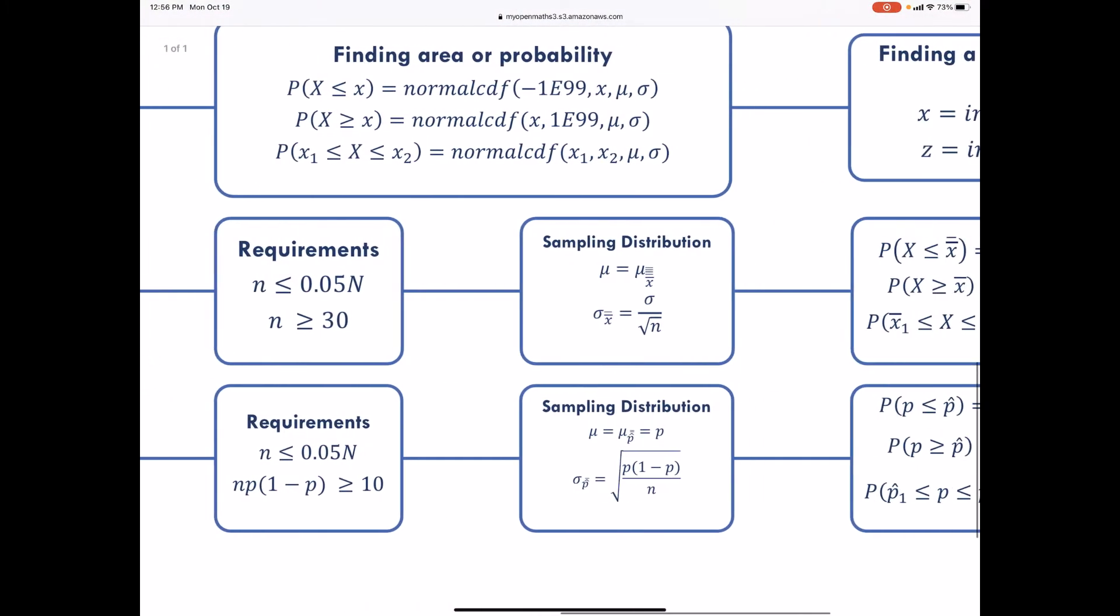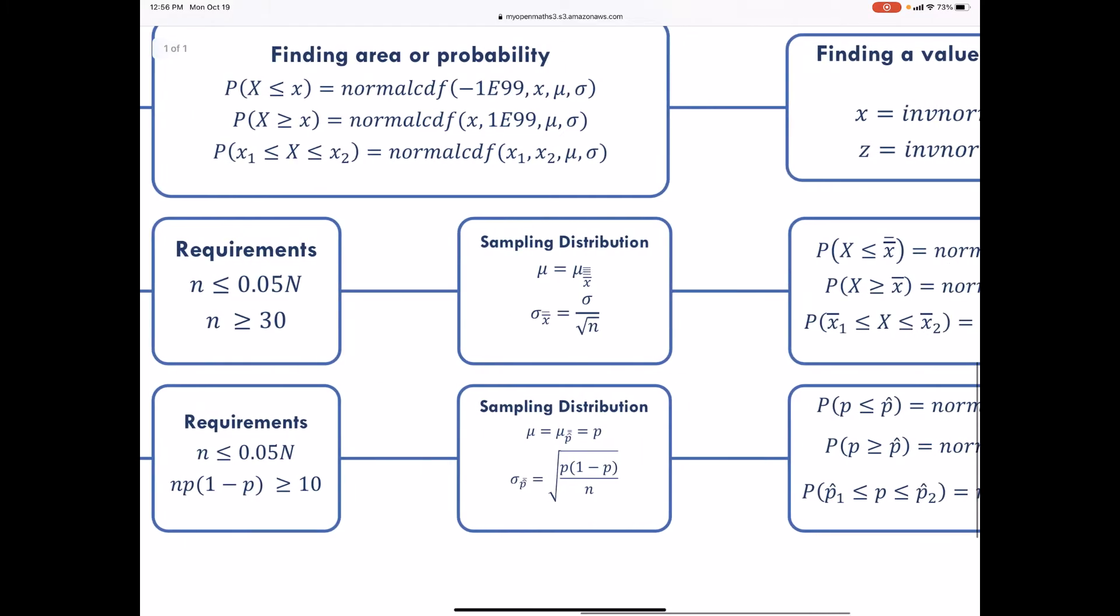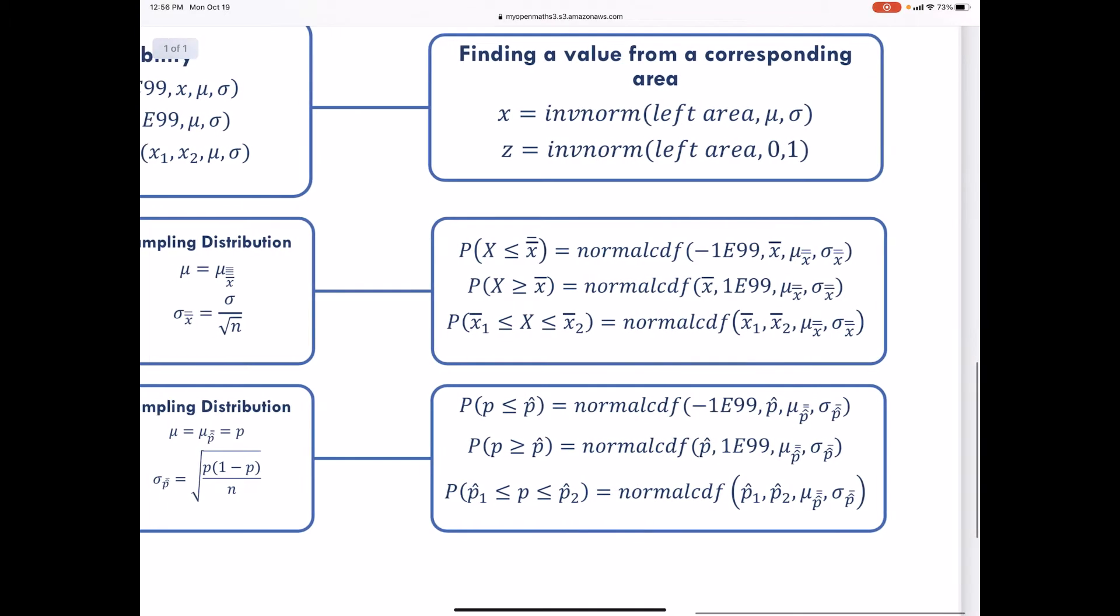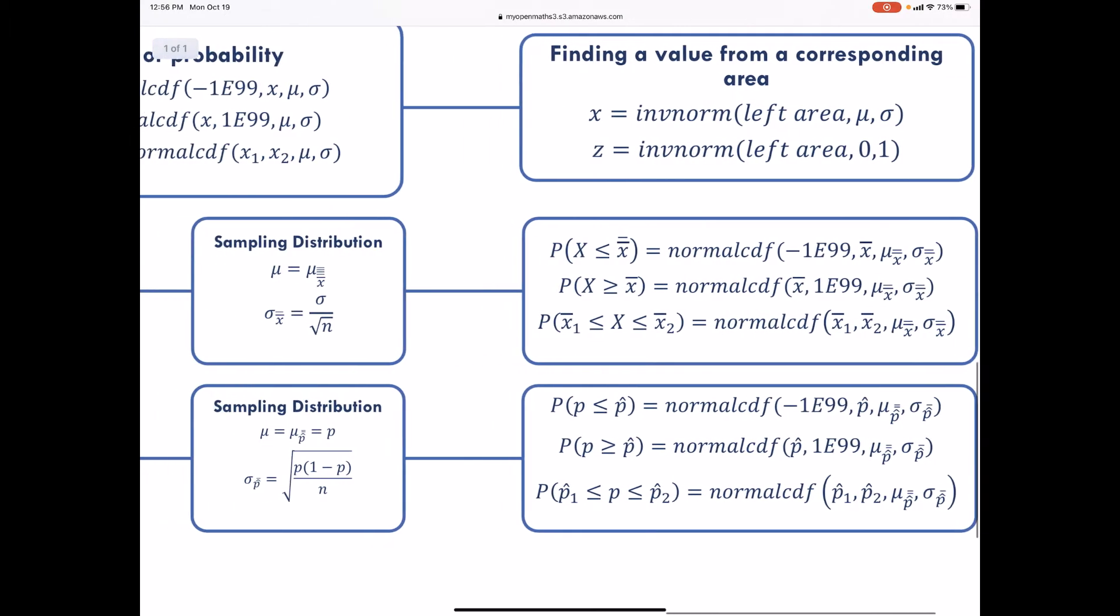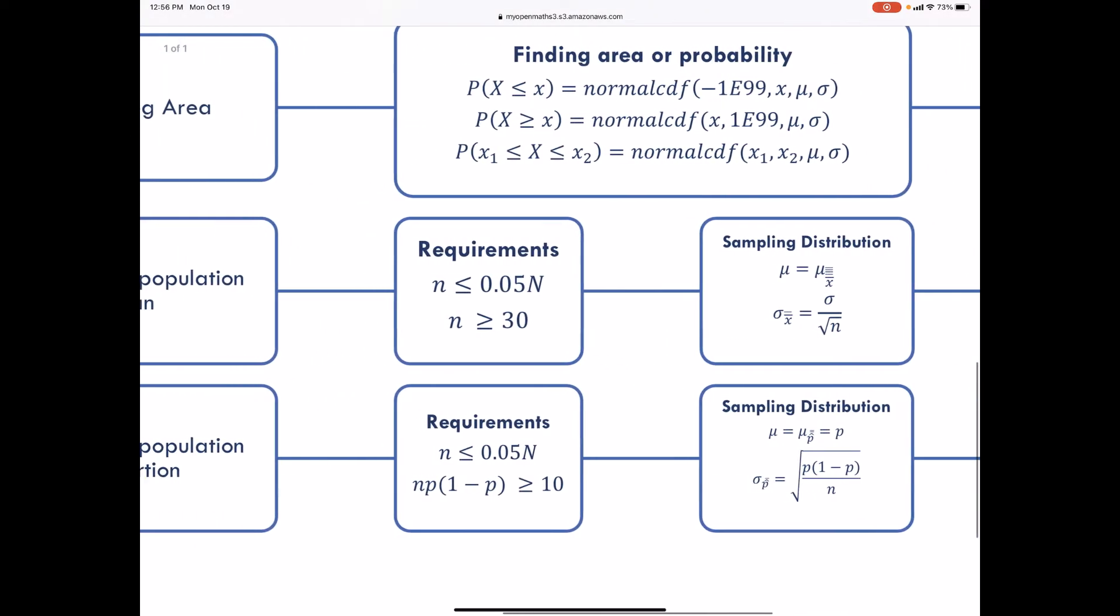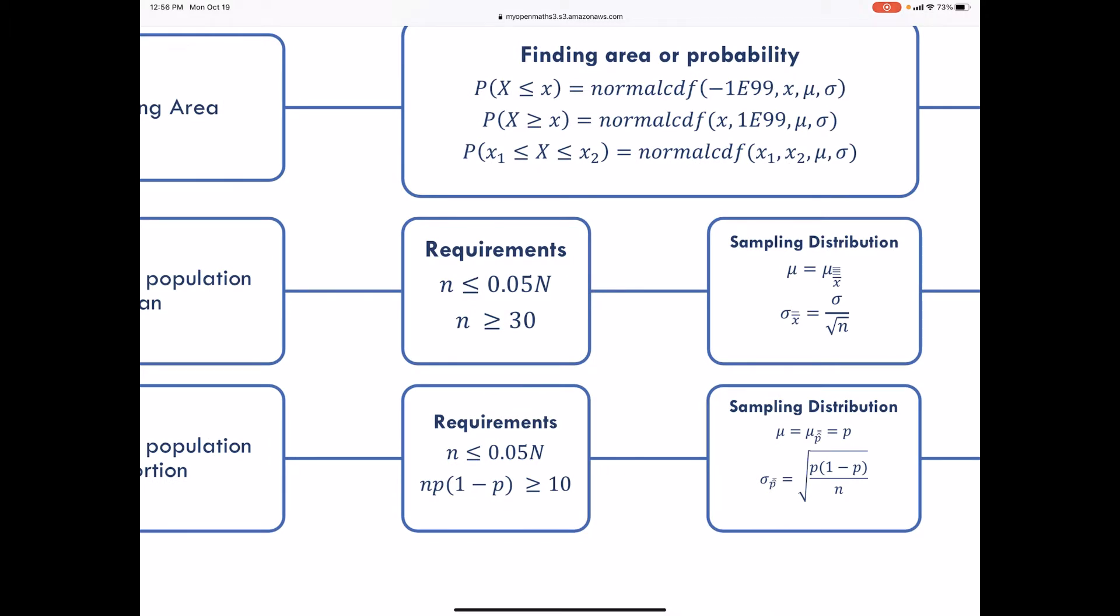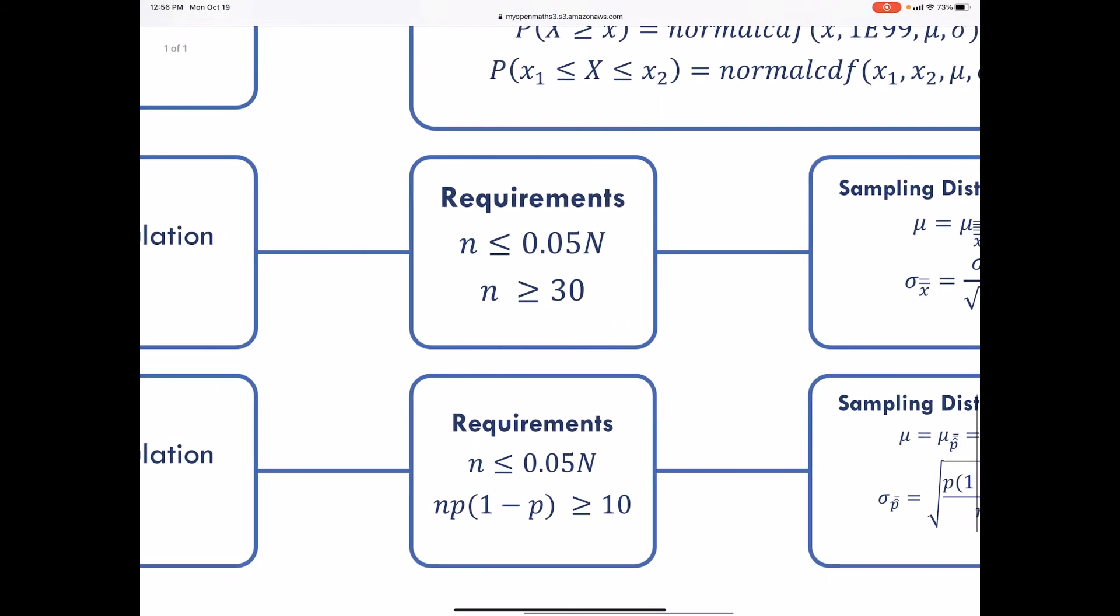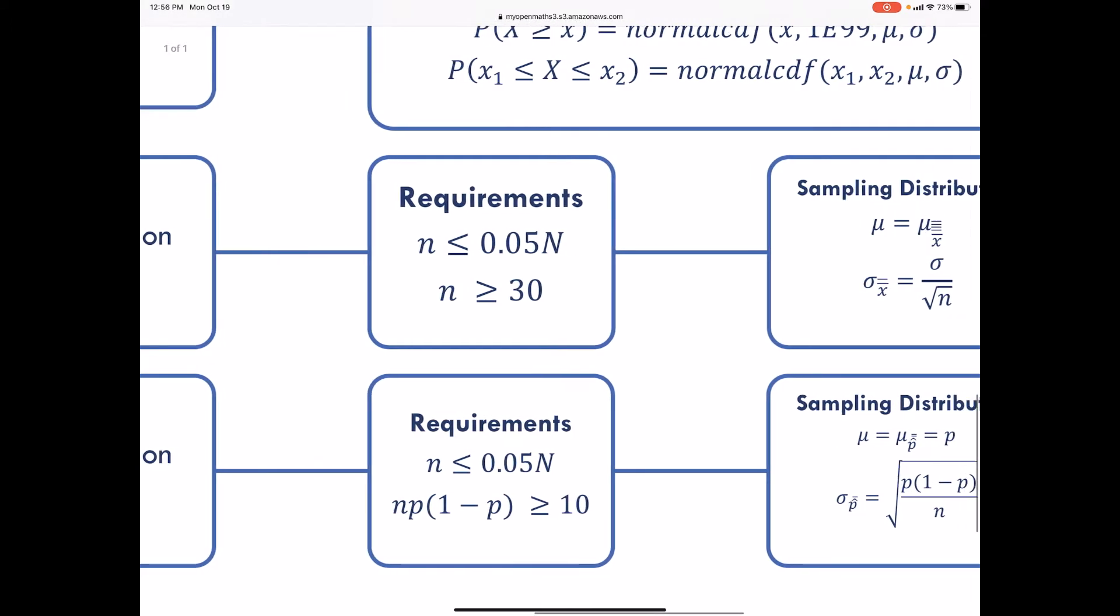Part two would be identifying the sampling distribution. And then lastly, we can finally answer the question. So notice when they do not tell us we have an approximately normal population, there are some preliminary pieces. The first one is verifying the requirements to ensure that we don't have sample bias and that we have approximately normal distribution.